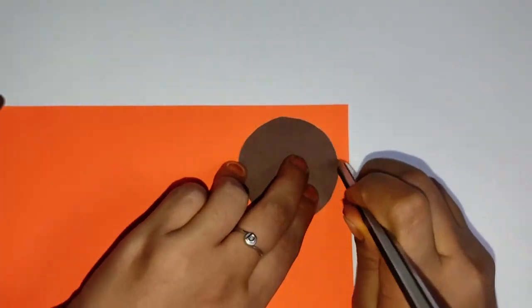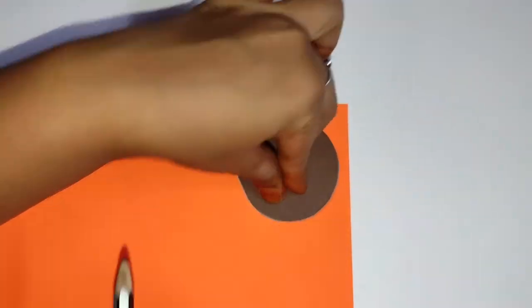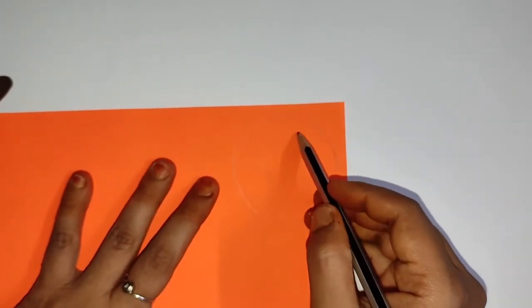Using the same head cutout, I am drawing another circle on the orange color paper.